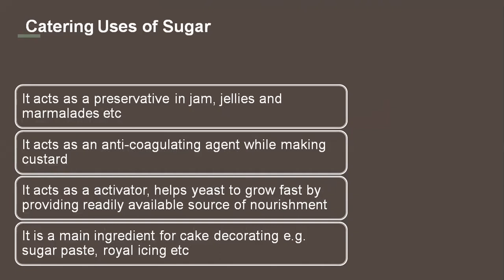Some more catering uses: sugar acts as a preservative in jams, jellies, and marmalades. It acts as an anti-coagulating agent while making custard — it does not let it set. It acts as an activator and helps yeast to grow fast. When sugar is given as food to the yeast, it activates the yeast activity, providing a readily available source of nourishment. It is also a main ingredient for cake decorating like sugar paste, royal icing, and so on.